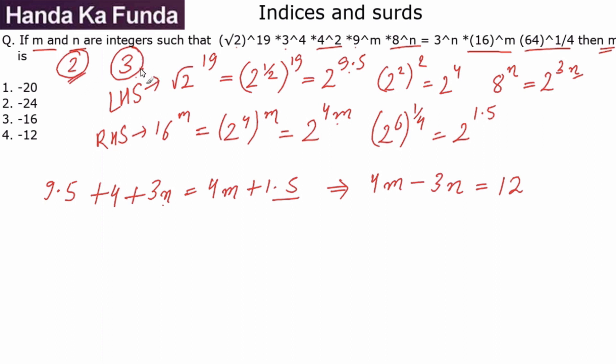What are the powers of 3 on the left-hand side? I have 3 to the power 4, so that will give me the power of 4. I have 9 to the power of m, so that will give me 2m. This is what I get on the left-hand side.